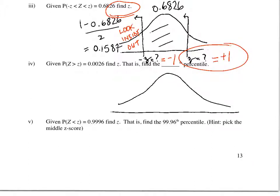Let's do the next problem. This problem, the statement of the Z score is the reverse. We want to find the Z score so that the area to the right of the curve — remember when we see big Z we say 'the curve' — the area to the right of the Z score under the curve is a small number, 0.0026. Now where would I have to be on this number line to have a small number to the right? That should be over here on the right side.